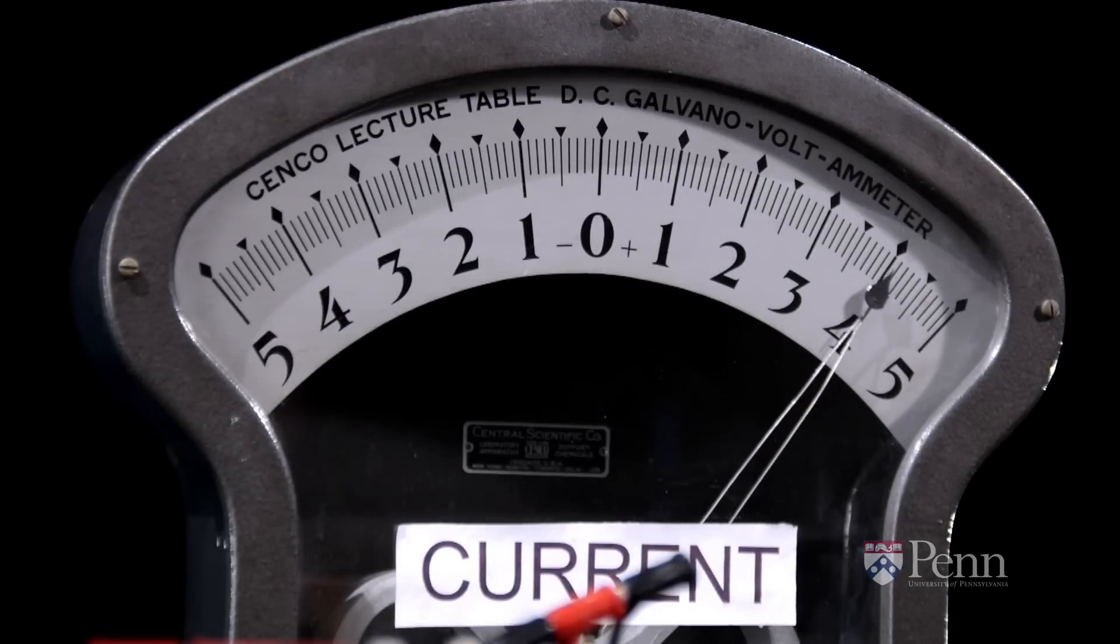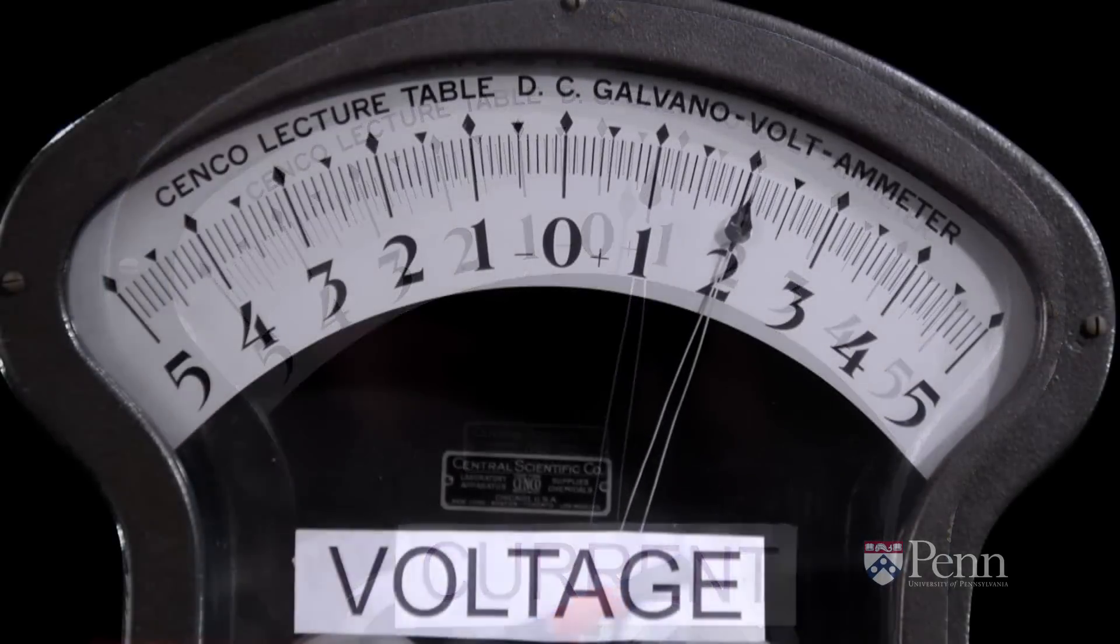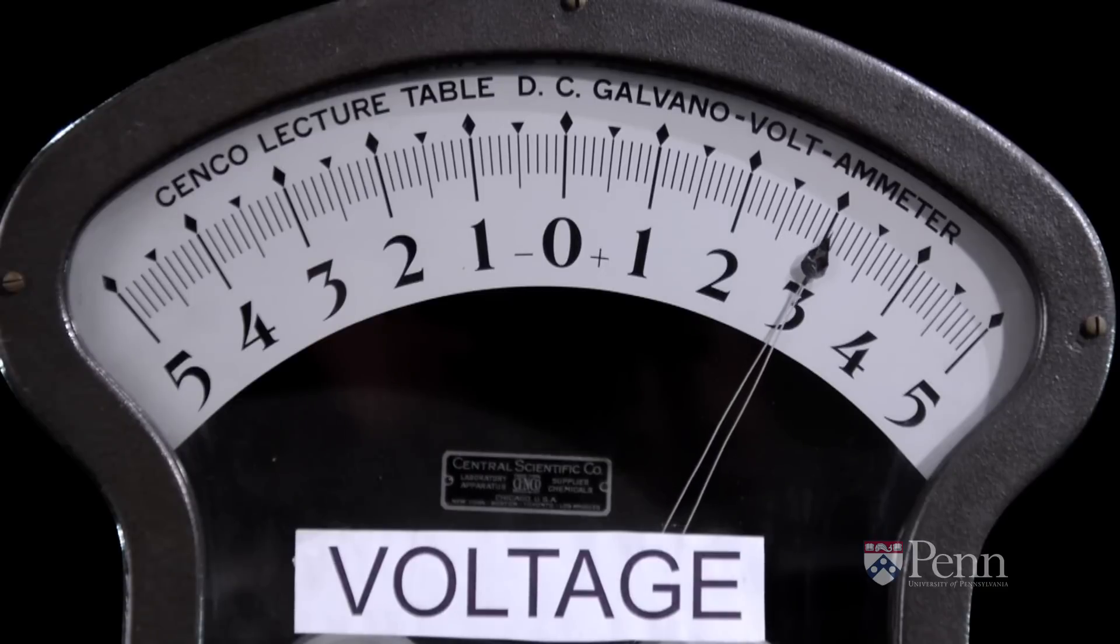The ammeter is measuring how much current runs into the capacitor, and the voltmeter is going to tell us how much the electric potential changes across it.